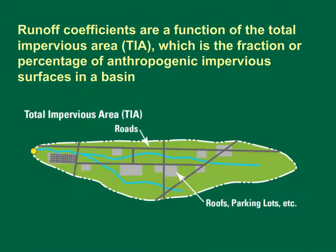The total impervious area, TIA, is defined as the proportion or percent of contributing area occupied by anthropogenic impervious surfaces, which primarily consist of pavement and roofs. TIA can be expressed as a fraction from 0 to 1, or as a percentage from 0 to 100, of the total drainage area. SELDOM uses the impervious fraction to define the TIA of the highway site and the impervious basin.